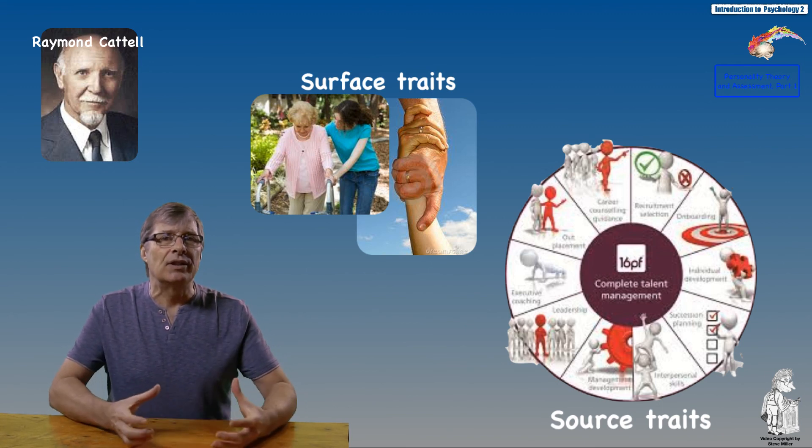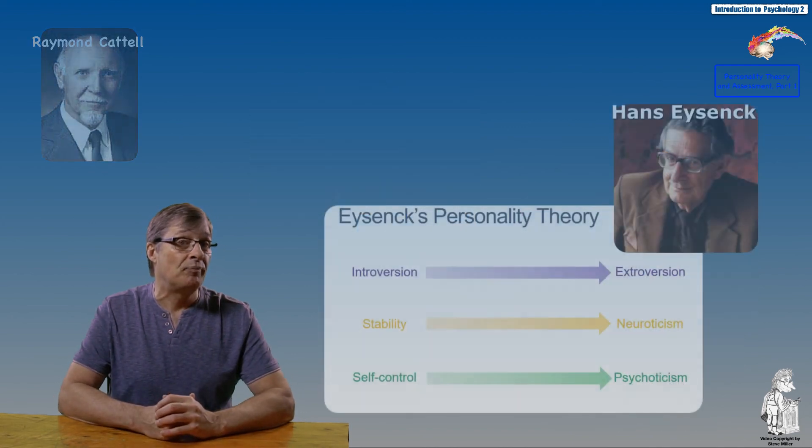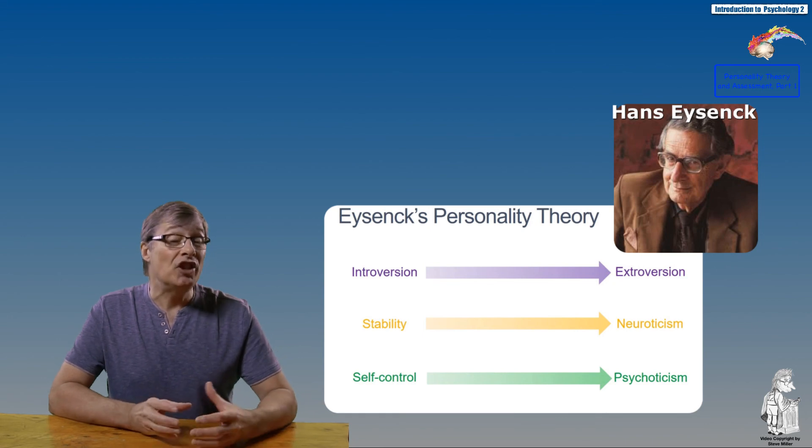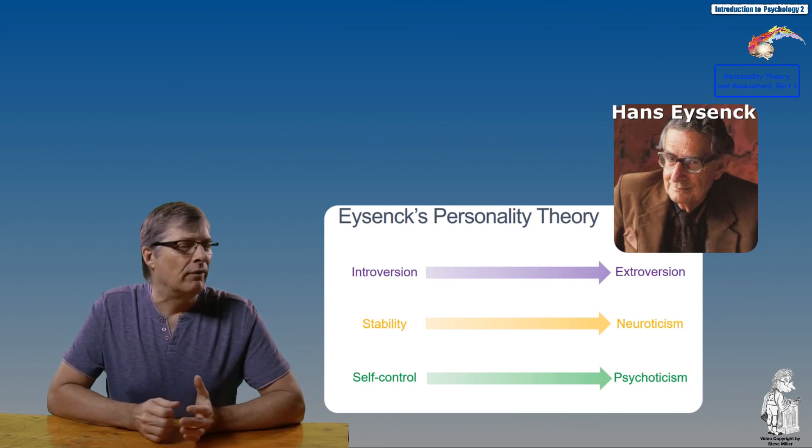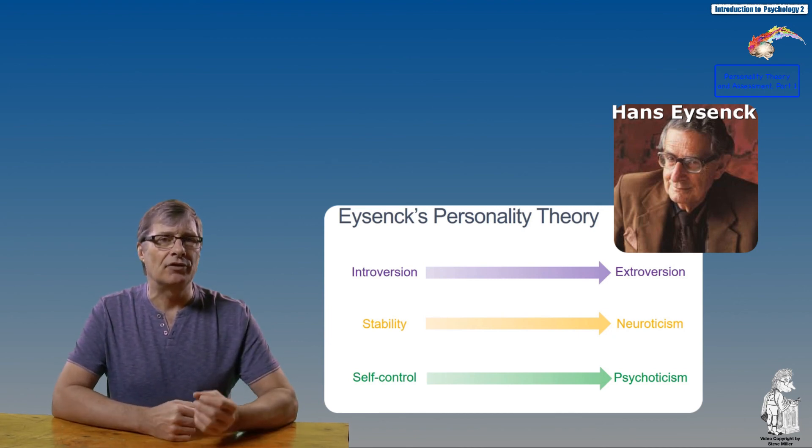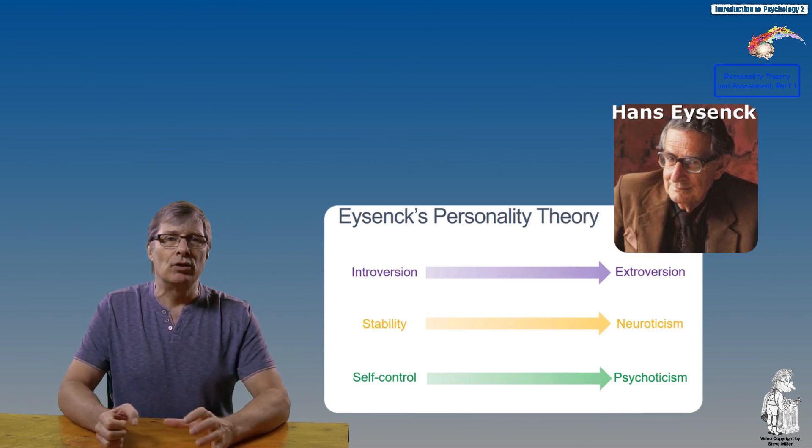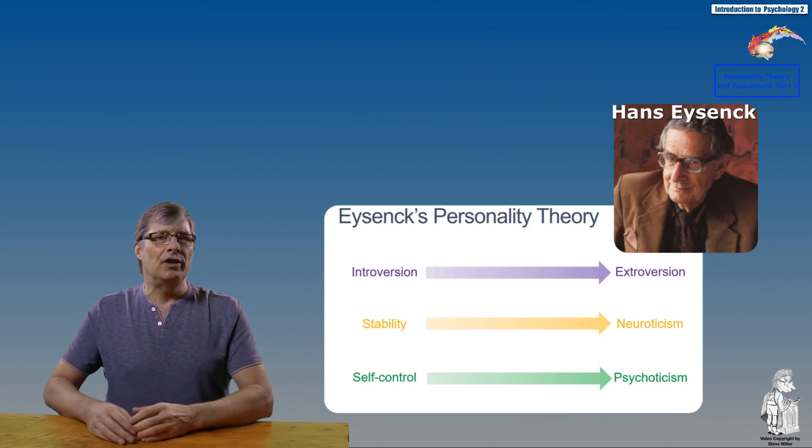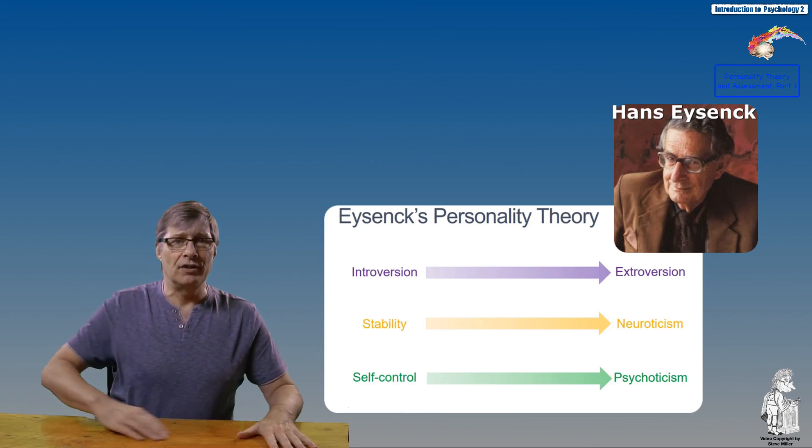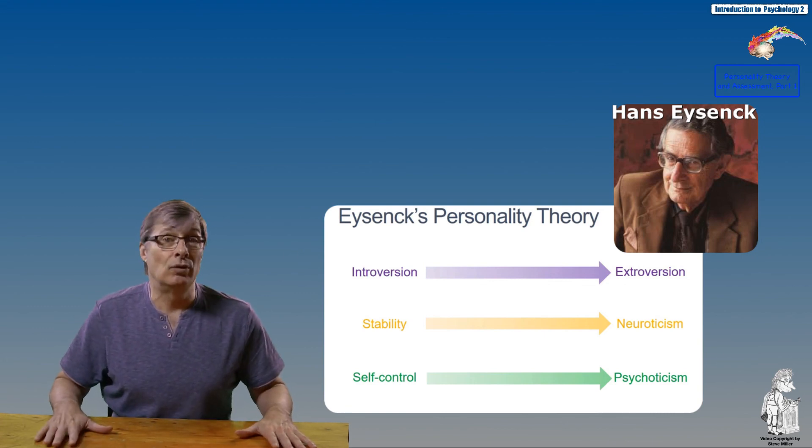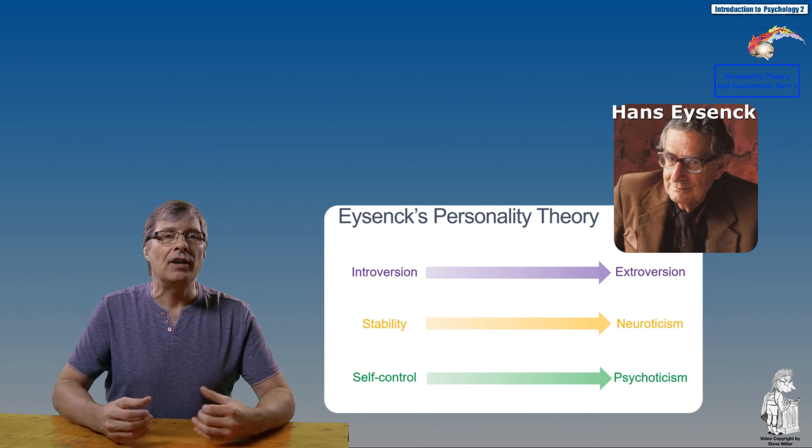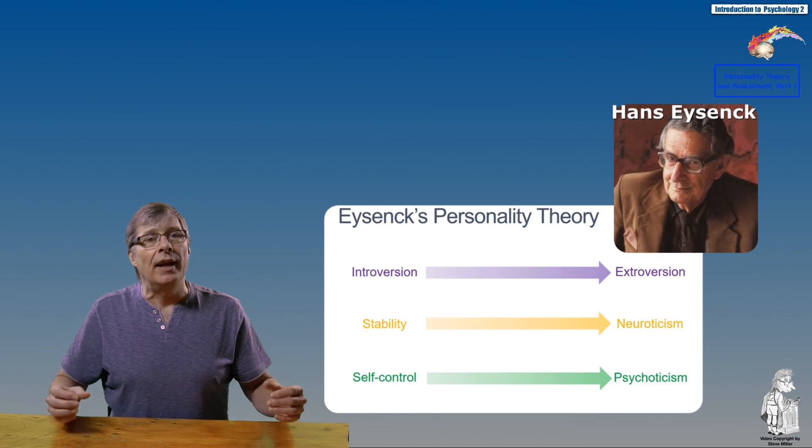Following him we have Hans Eysenck. He believed personality was genetic or gene-based and very minimal environmental factors played a role. He identified three of the most important dimensions of psychology. First is psychoticism—an individual's link to reality—with extreme ranges from psychosis on the far side, people who live in a world of hallucinations and delusions, to those whose thought process is very rigidly tied to the material world and who lack creativity.